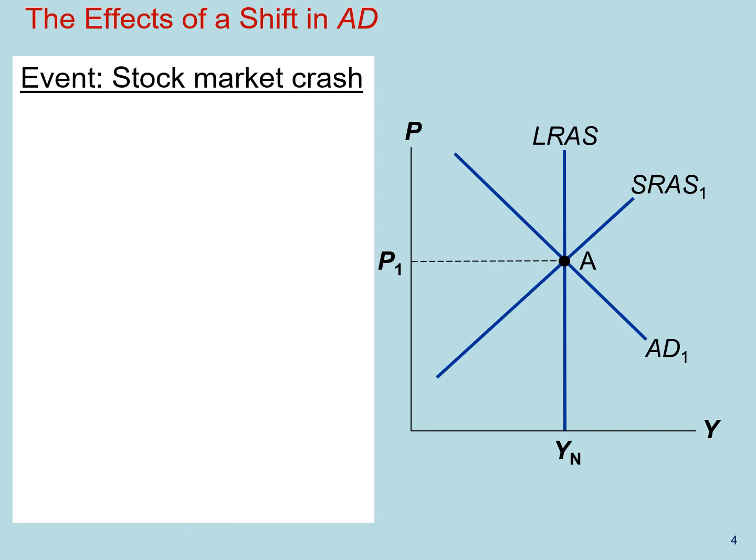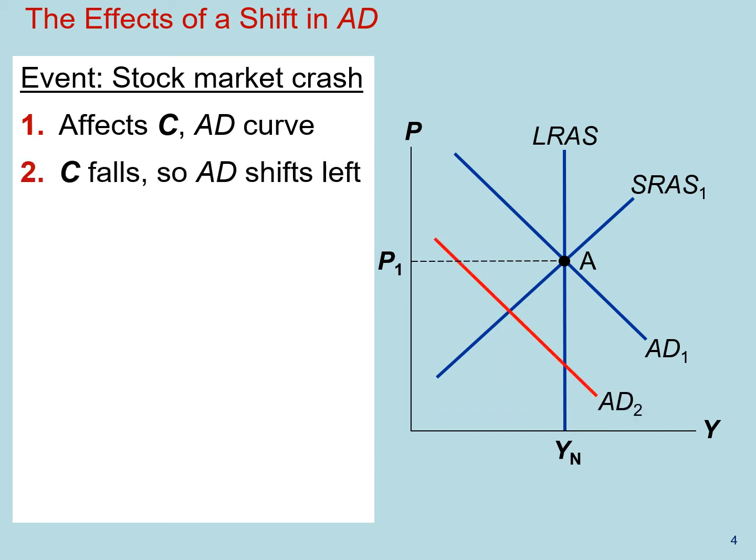In this scenario, the stock market crash reduces consumers' wealth, which suppresses their spending. We're thinking that that is going to affect consumption and therefore the aggregate demand curve. Now, in which direction? Well, if consumption falls, we think aggregate demand will shift to the left.